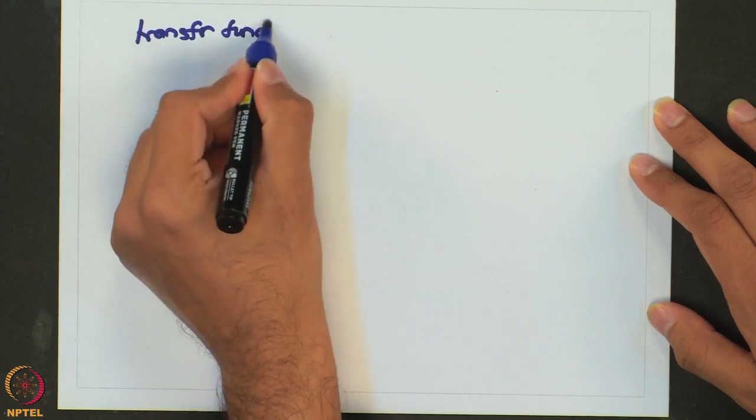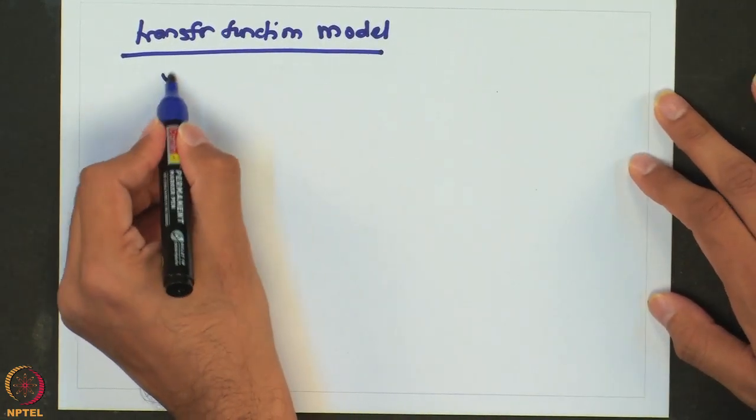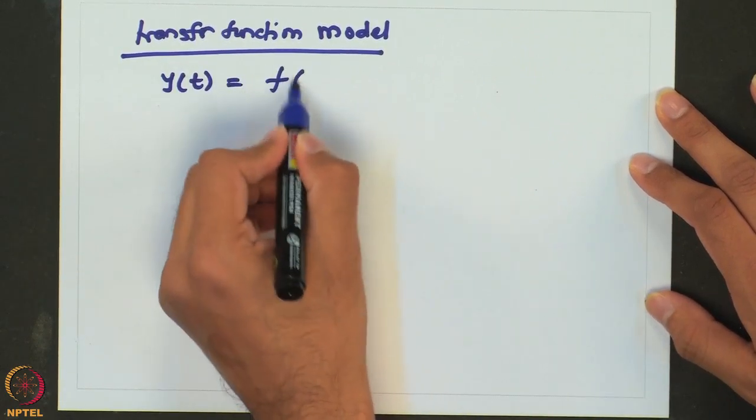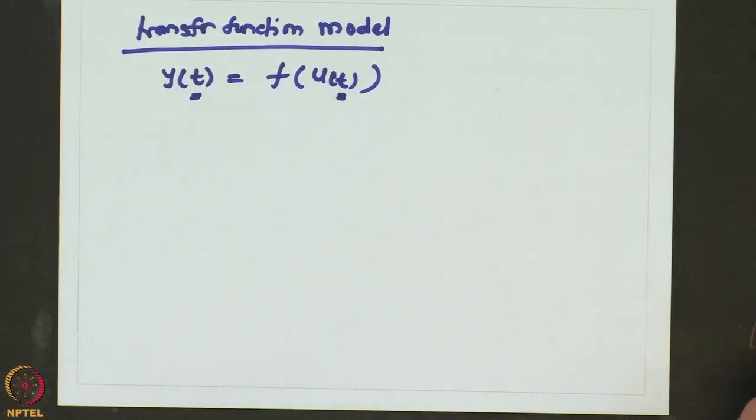We have looked at three different ways in which the dynamic model can be represented and formulated. Let us now look at how we would be representing it so that it can help us understand the dynamics or design a control system. One of the most commonly used ways of analyzing process dynamics and designing a control system is known as a transfer function model. Any dynamic model tells us how the output changes as a function of input and in a transfer function model, we move from time domain to what is known as a Laplace domain.